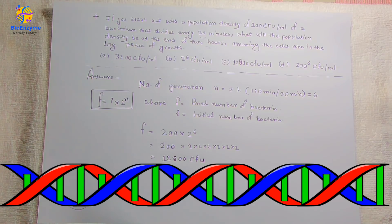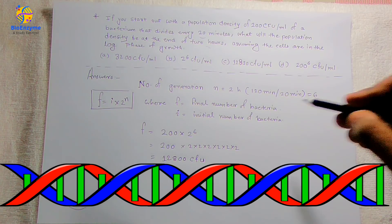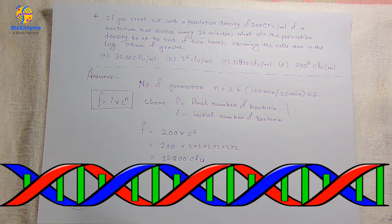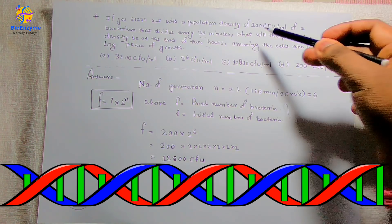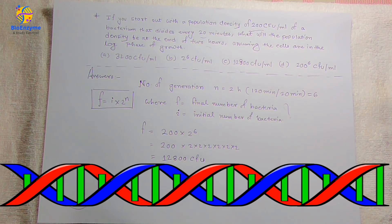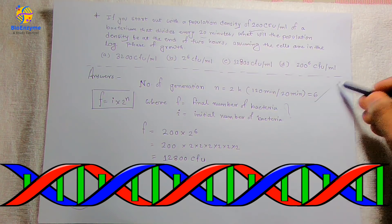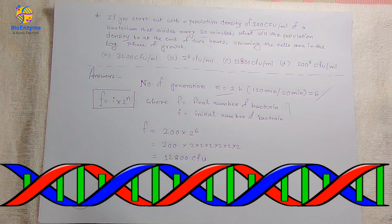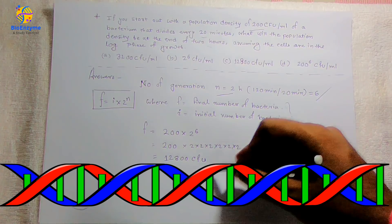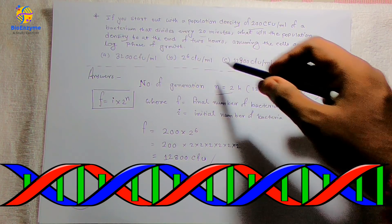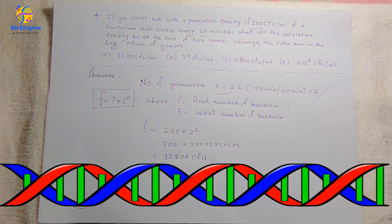Now applying the formula f equals i × 2^n: f is the final number of bacteria (unknown), and i is the initial number of bacteria, which is 200 CFU (colony forming units) from the question. So f equals 200 × 2^6, which simplifies to 12800 CFU/ml. Therefore option C is correct.